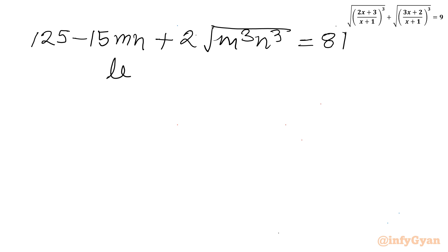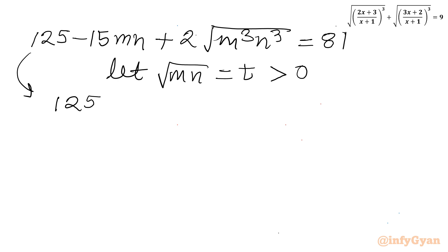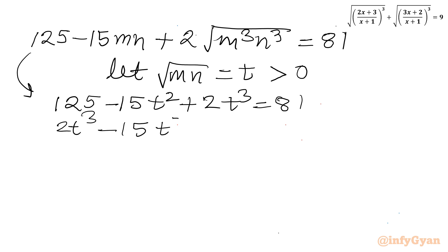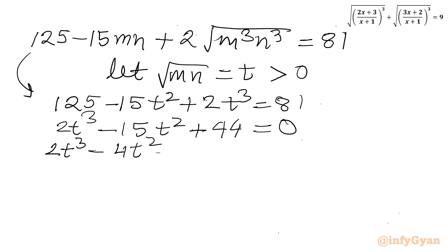Now I let t = √(m³n³), so t must be greater than 0 since m and n are both positive. Our equation becomes 125 - 15t² + 2t³ = 81, or equivalently 2t³ - 15t² + 44 = 0. This is a cubic equation and I will use factorization. I split -15t² as -4t² - 11t², giving 2t³ - 4t² - 11t² + 44 = 0.